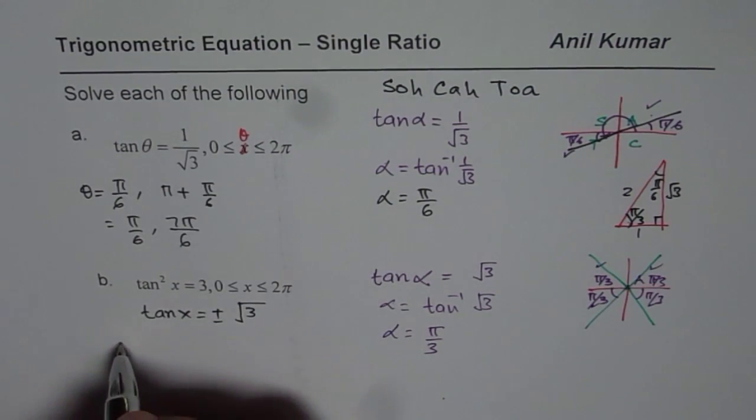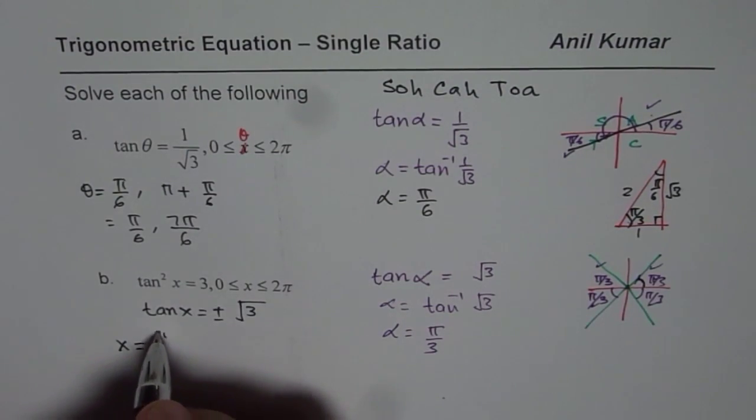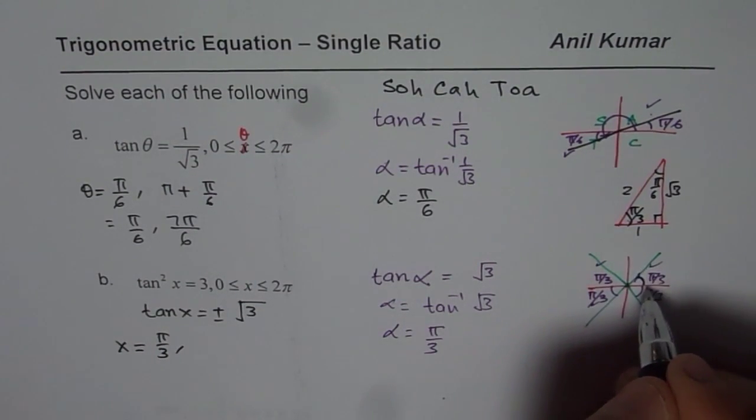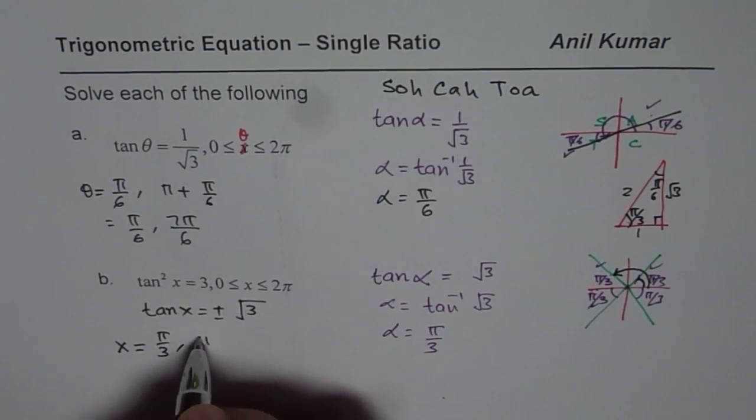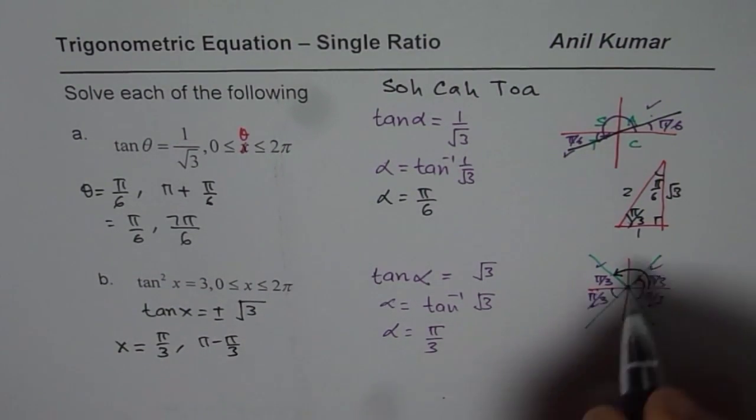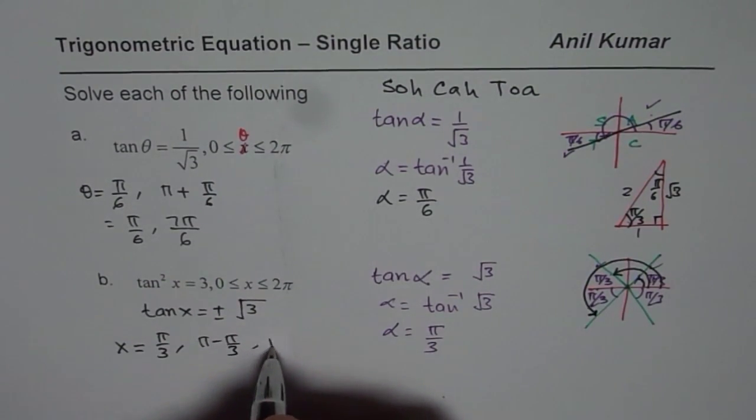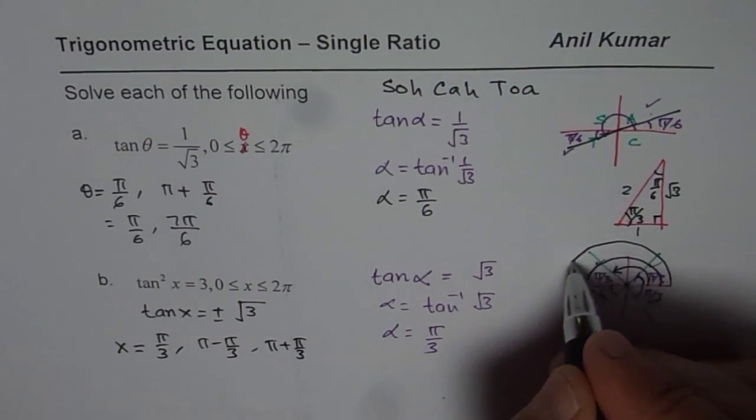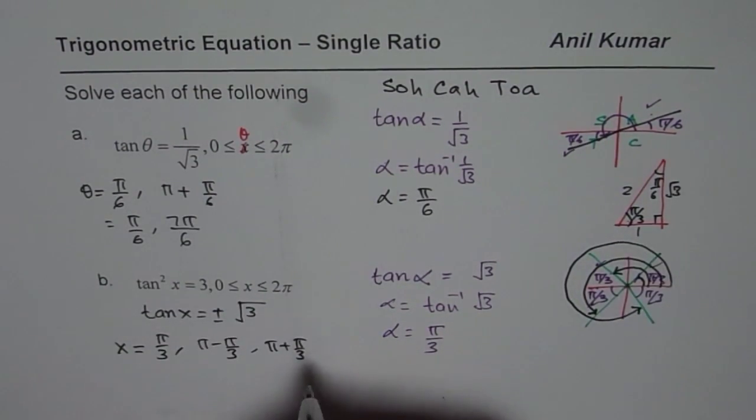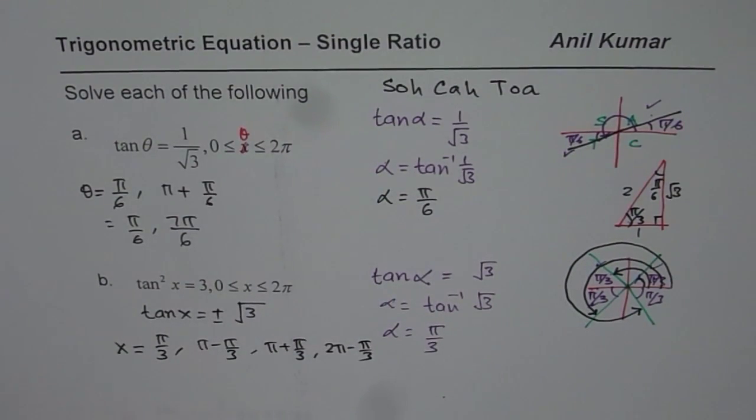In this case x should be equal to pi by 3, that is correct. Then it is pi minus pi by 3. And then we have this one which is pi plus pi by 3. And then we have this one which is 2 pi minus pi by 3. You get the point?